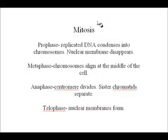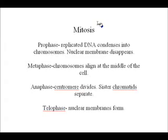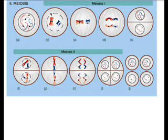Replicated DNA condenses in the chromosomes and the nuclear membrane disappears. Metaphase: chromosomes align at the middle of the cell. Anaphase: the centromere divides and the sister chromatids separate. Telophase: the nuclear membrane forms.